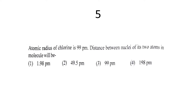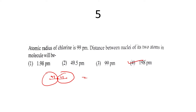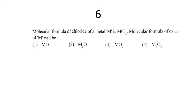The fifth question: the atomic radius of chlorine is 99 picometers. The distance between the nuclei of its two atoms in a molecule will be: each atom contributes 99 pm, so adding both gives 99 + 99 = 198 picometers. Hence option four is correct.